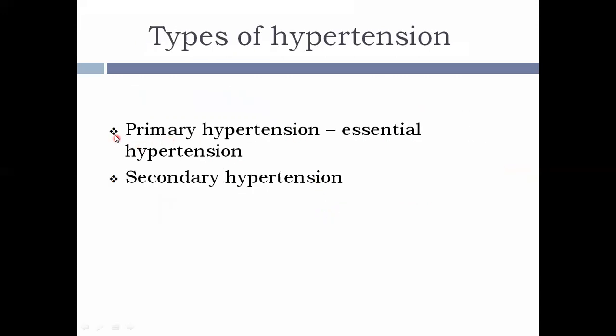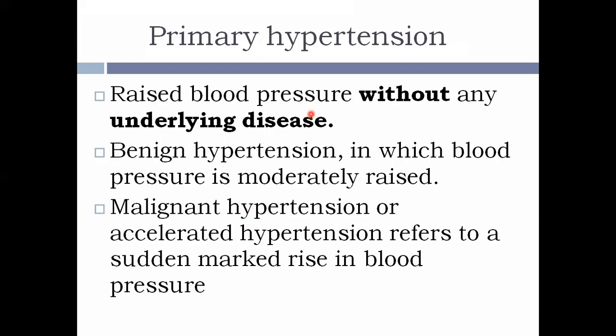There are two types of hypertension: primary hypertension and secondary hypertension. Primary hypertension is also termed essential hypertension — it is not due to any underlying disease; it arises on its own. Risk factors may include obesity, mental tension, and smoking. The rise in blood pressure here is mainly due to an increase in peripheral resistance. Primary hypertension is further divided into benign hypertension and malignant hypertension.